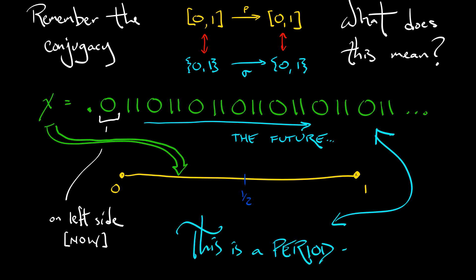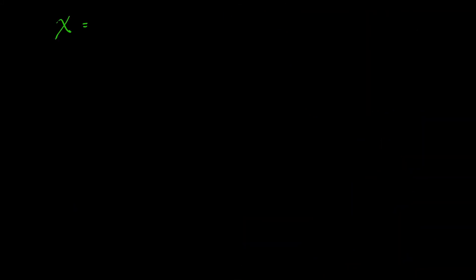Aha! So a period three orbit corresponds to a symbol sequence with period three. If you think about what this looks like, not in terms of the symbol sequence, but in terms of the geometric Lorentz attractor.